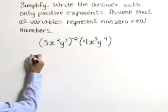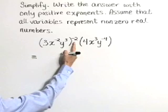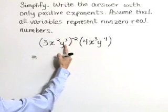I'm going to start the simplification process here with this outer exponent, bringing it in and applying it to each of our factors.